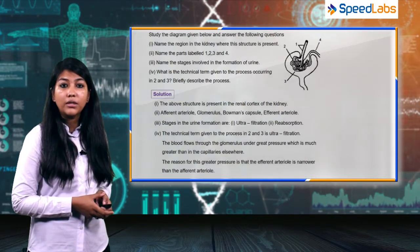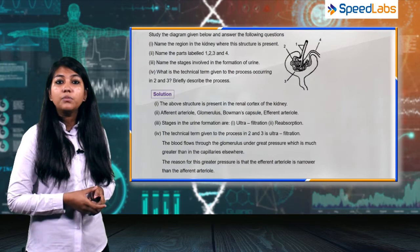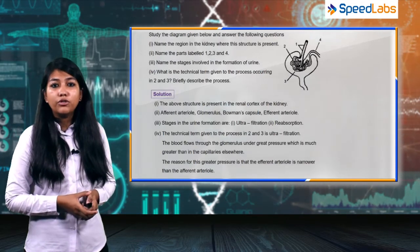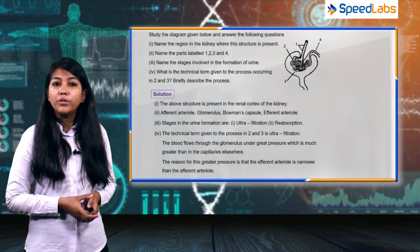is narrower than the afferent arteriole. Because of this pressure, ultrafiltration takes place in the Bowman's capsule.